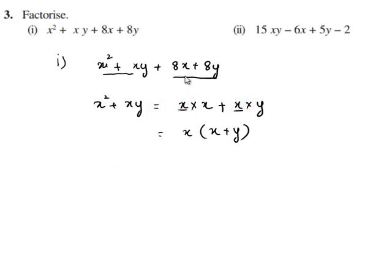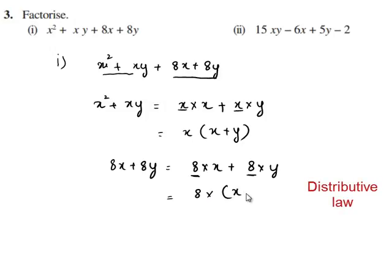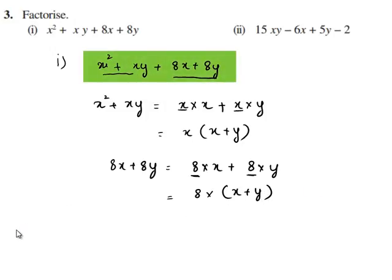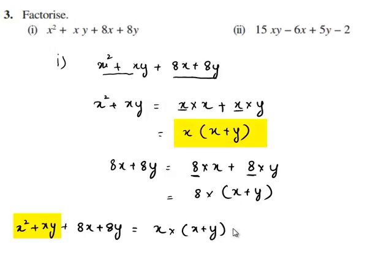Similarly we find 8 as common in the second term of the expression. So we rewrite 8x plus 8y as 8 times x plus 8 times y. Since 8 is a common factor we bring it out using the distributive law, and we are left over with x in the first term and y in the second term. So we rewrite the whole expression x squared plus xy plus 8x plus 8y as x times x plus y plus 8 times x plus y.